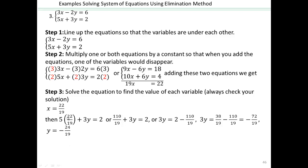Now plug x equals 22/19 into either equation to get y. Using the second equation: 5 times (22/19) plus 3y equals 2. Multiply 5 times 22 to get 110/19, then solve for y: 3y equals 2 minus 110/19, giving 3y equals negative 72/19. Dividing both sides by 3 gives y equals negative 24/19. So the solution is x equals 22/19 and y equals negative 24/19. You could also use substitution to verify — it will give the same solution, just more tediously.